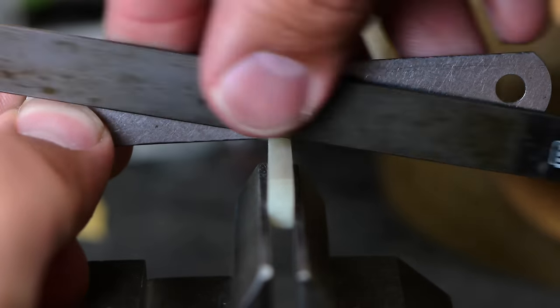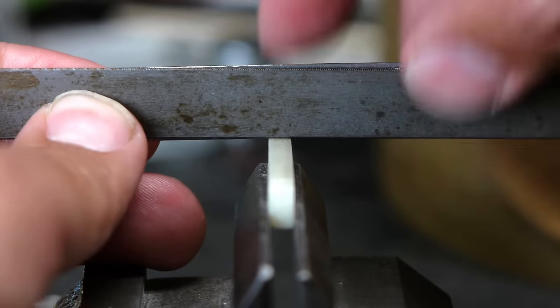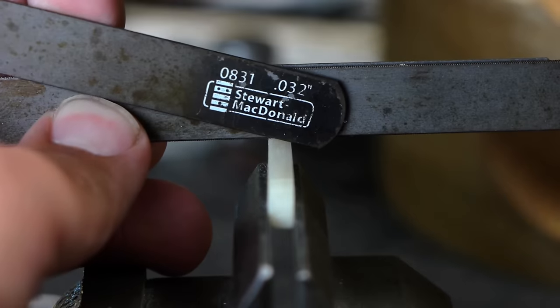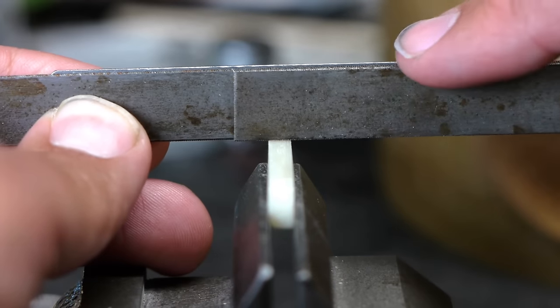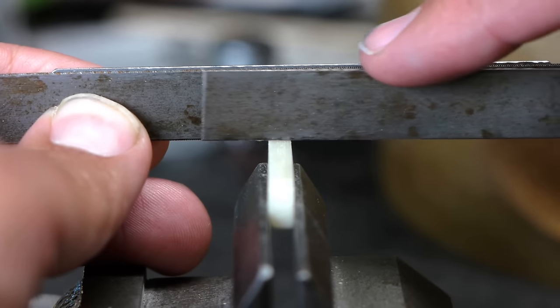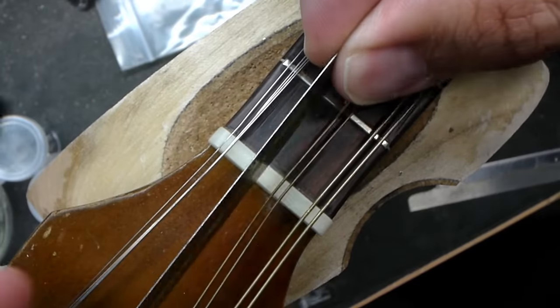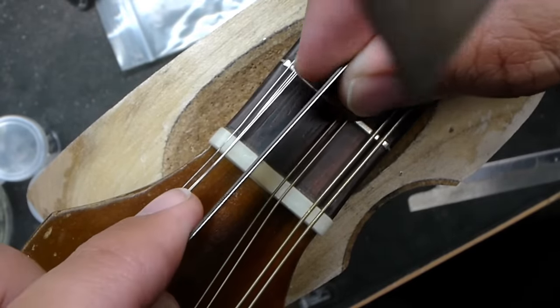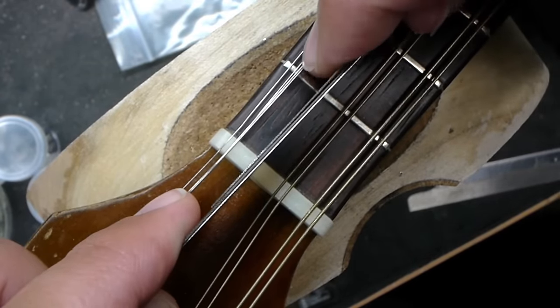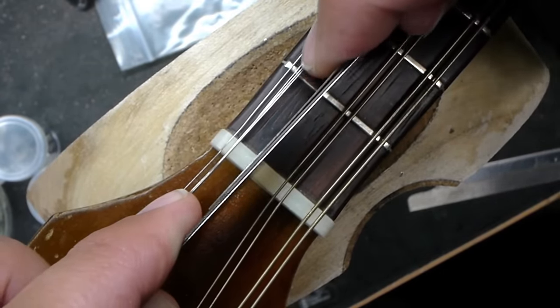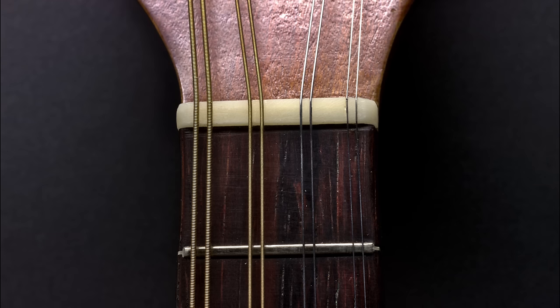Extremely thin strings, like the B, High E, or Oct G strings, don't have enough mass for a feeler gauge or nut file to brace against them. It's a little tricky at first, holding two nut files in one hand as a fence and cutting along them with a nut file in your other hand, but you'll get the feel for it.